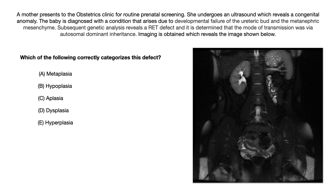Let's get into today's practice question. A mother presents to the obstetrics clinic for routine prenatal screening. She undergoes an ultrasound which reveals a congenital anomaly. The baby is diagnosed with a condition that arises due to the developmental failure of the ureteric bud and the metanephric mesenchyme. Subsequent genetic analysis reveals a RET defect, and it is determined that the mode of transmission was via autosomal dominant inheritance. Imaging is obtained which reveals the image shown below.